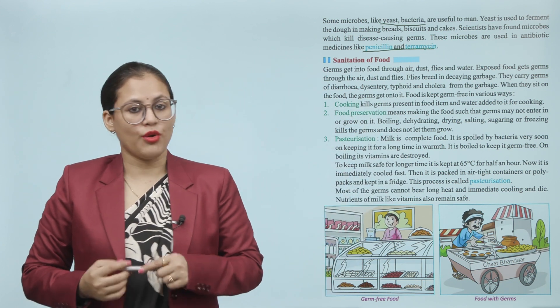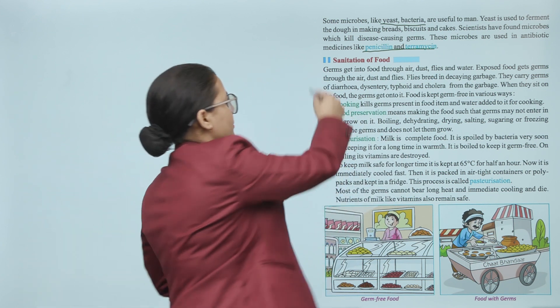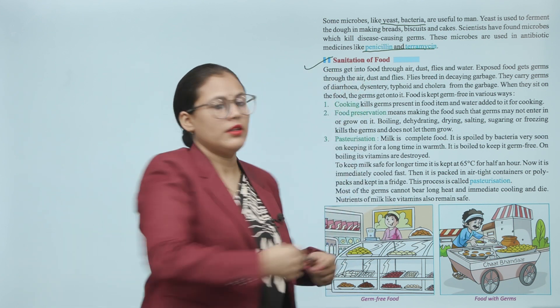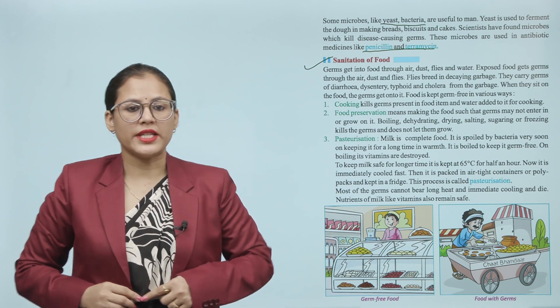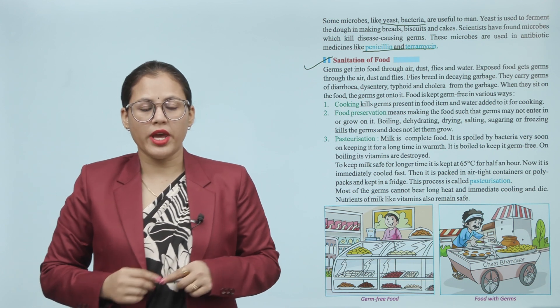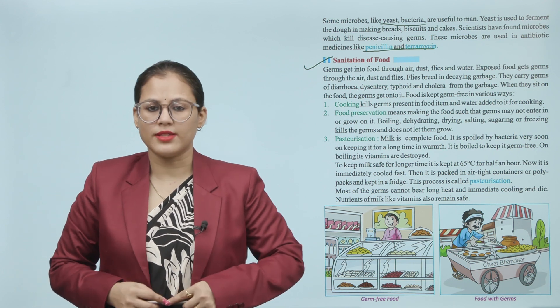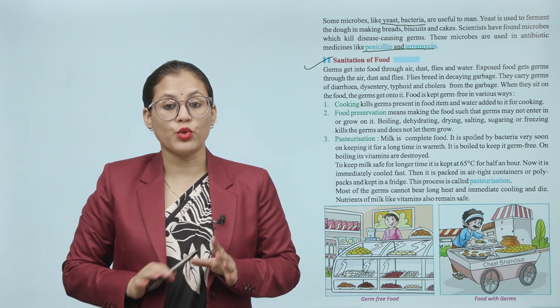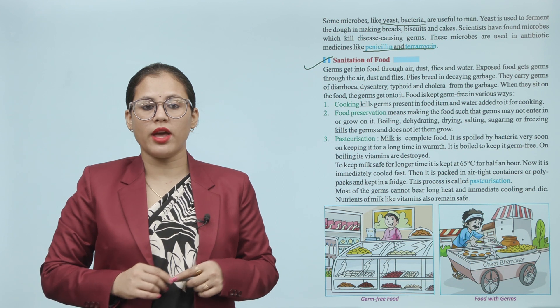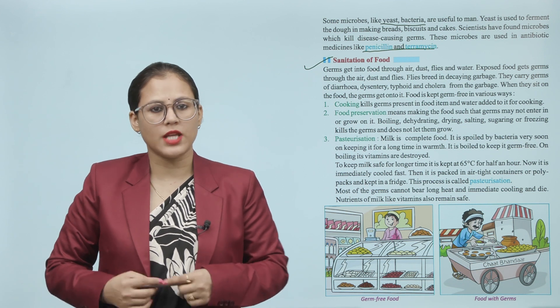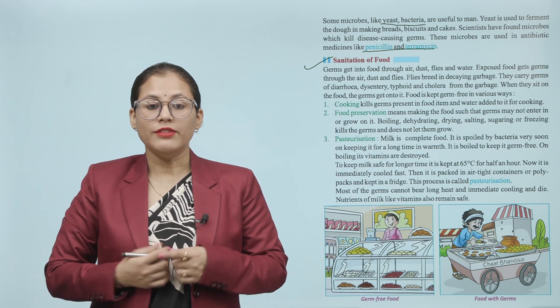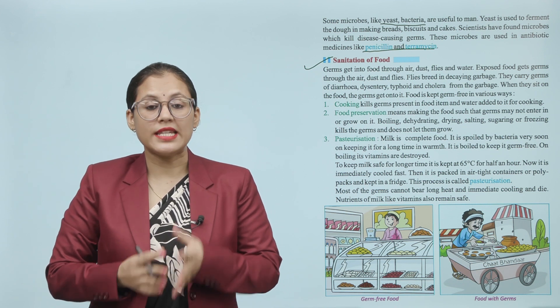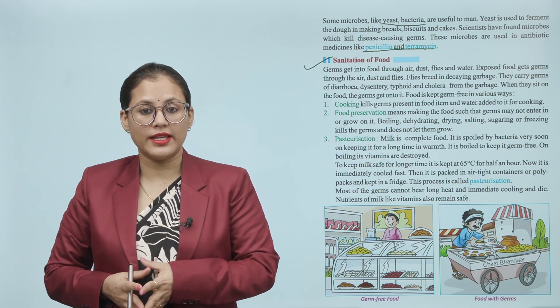Sanitation of food. Germs get into food through air, dust, flies and water. Exposed food gets germs through the air, dust and flies. Flies breed in rotting garbage.